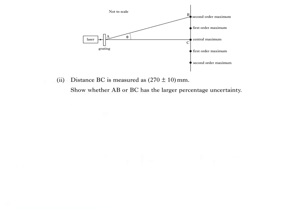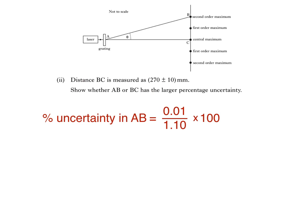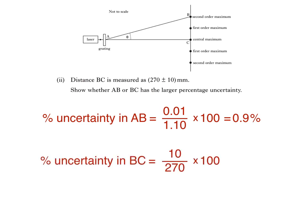Part B2 says: distance BC is measured as 270 plus or minus 10 millimetres. We need to show whether AB or BC has the larger percentage uncertainty. We'll work out the percentage uncertainty in AB first: divide the absolute uncertainty in AB by its mean value — that's 0.01 divided by 1.10 — then multiply by 100. This gives a percentage uncertainty in AB of 0.9%. Using the same method for BC: divide the absolute uncertainty of 10 millimetres by the mean value of 270 millimetres, then multiply by 100, giving us 3.7%.